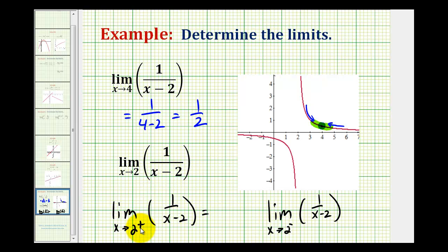So as we approach two from the positive side, notice how our denominator is still approaching zero, but it will always be a positive value. So if we have one divided by a really small positive value, we would actually be approaching positive infinity.